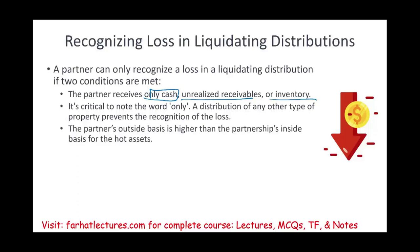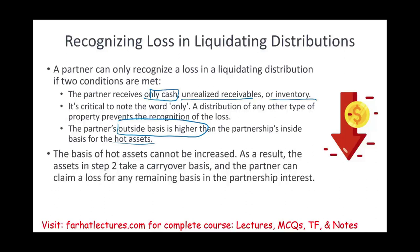Second condition: the partner's outside basis is greater than the inside basis for the hot asset — basically, we're getting less than what our basis is. The basis of the hot asset cannot be increased; you cannot step up the value of the inventory or the receivable. As a result, the assets in step two take the carryover basis and the partner can claim a loss for any remaining basis in the partnership interest. Let's look at an example.